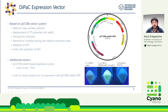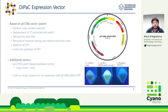We are working on making additional vectors — for example, swapping the pET-28B backbone for pCC1-FOS, which can handle much larger inserts, and replacing the origin of replication so that we can also perform co-expression experiments.